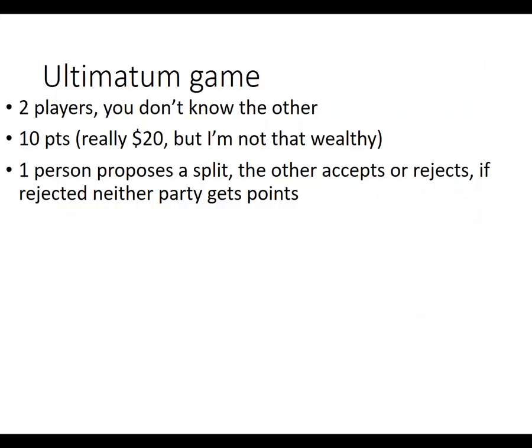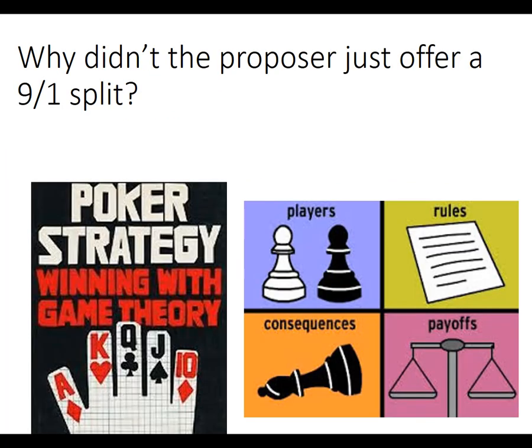There's a game called the Ultimatum Game. Usually in an in-person class I'll have students play it. The way it works: there are two players who don't know each other. They're given an endowment of money — maybe twenty dollars, maybe a hundred, sometimes ten. I do it with ten extra credit points. The first person proposes a split — they might choose five and five, or six and four. The other person gets to accept or reject the offer. If they accept, whatever was offered is what happens; if they reject, neither party gets any points or money at all.